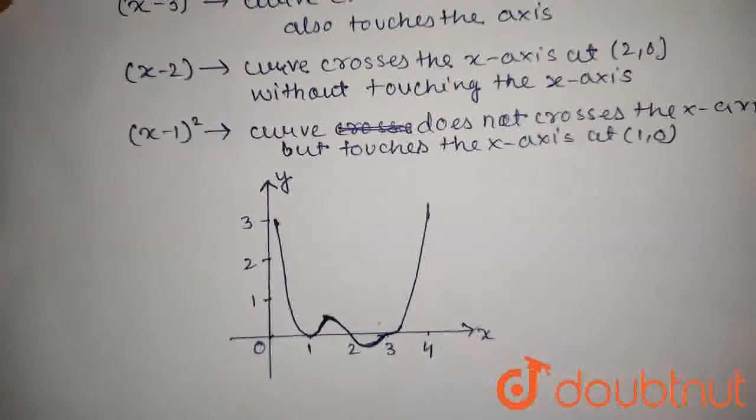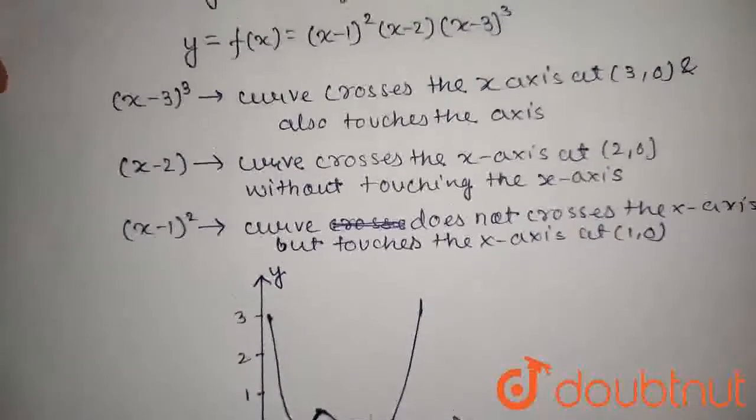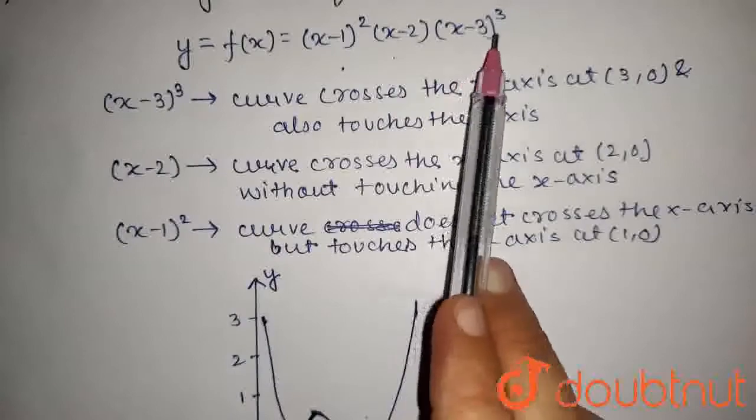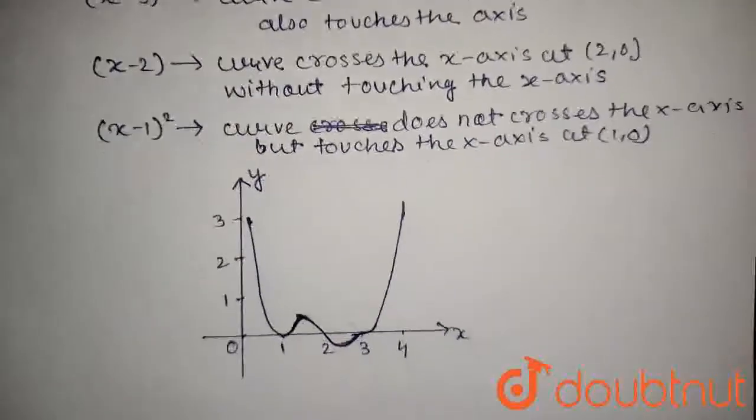So, the graph of the equation x minus 1 to the whole square, x minus 2, x minus 3 whole cube will be this.